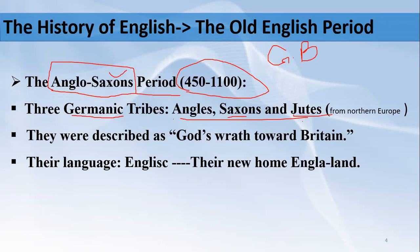There was another tribe as well, but that tribe did not contribute much to the history of the English language or its linguistic features, which is why historical linguists usually do not take it into consideration. These people were considered to be God's wrath towards Britain because they were warrior in nature. They used to engage in wars with one another, with one tribe dominating the others in turns, and these fights would continue.